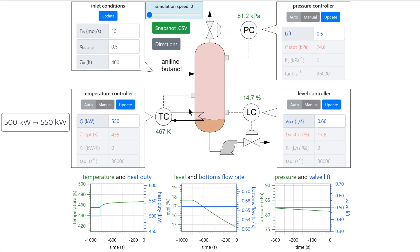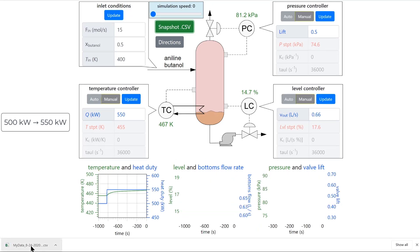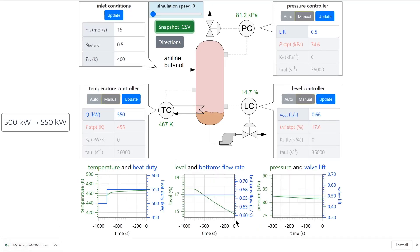Once you feel like you have enough data press snapshot CSV below the simulation speed slider and a spreadsheet will download to your computer.